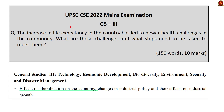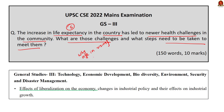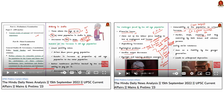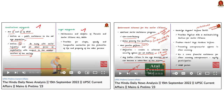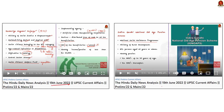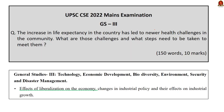Question number 5 in GS Paper 3: 'The increase in life expectancy in the country has led to newer health challenges in the community. What are those challenges and what steps need to be taken to meet them?' For this, start by writing about why the average age of Indians is increasing, then write about health-related challenges faced by senior citizens, and finally steps to address the issues. We covered this question in its entirety in our 15th September 2022 Hindu News Analysis — covering reasons for increased old-age population, challenges faced, constitutional and legal safeguards, and government steps. Additionally, our 15th June 2022 Hindu News Analysis exclusively covered schemes launched for senior citizens.